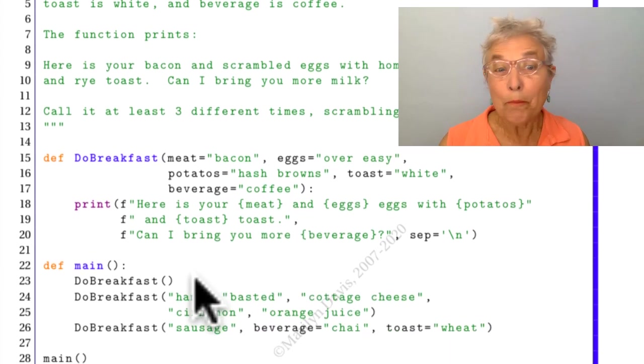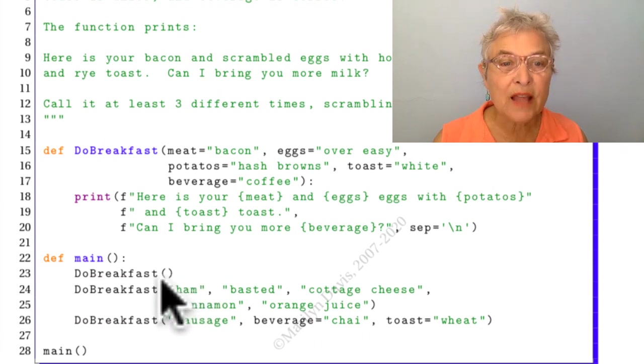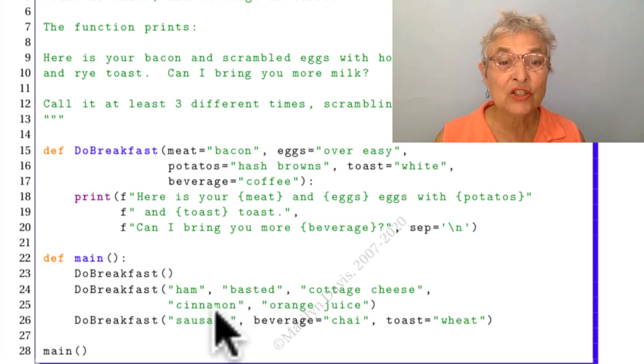So to test it, we call do breakfast with nothing. And we'll see that we get the default breakfast coming out. Here I'm using positional arguments where instead of bacon, we'll have ham. And instead of over easy eggs, we're going to get basted eggs with cottage cheese, cinnamon, toast, and orange juice.